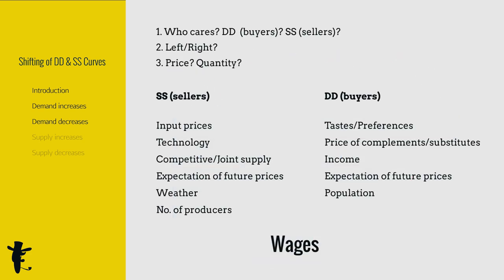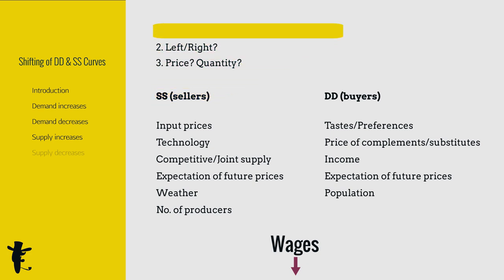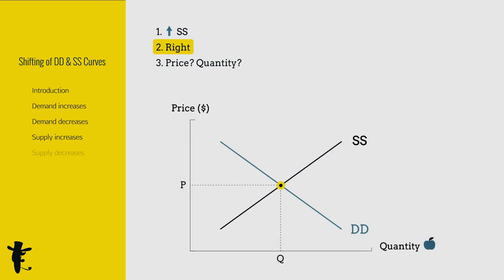When wages decrease — remember, labour is a type of input — input prices decrease. Producers can produce more with the same budget now. So supply increases. Supply shifts right.